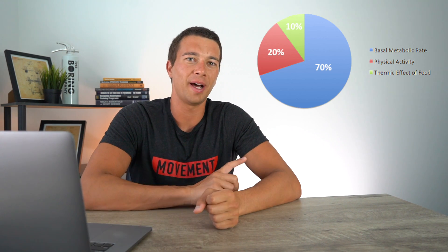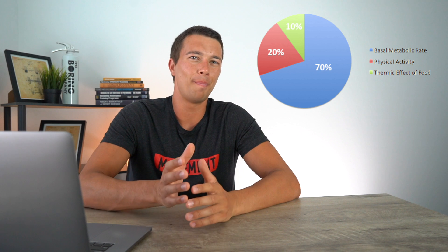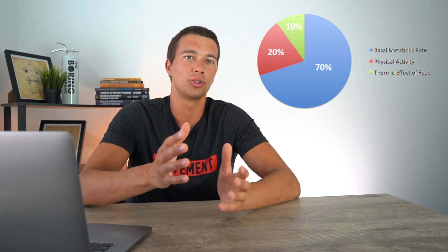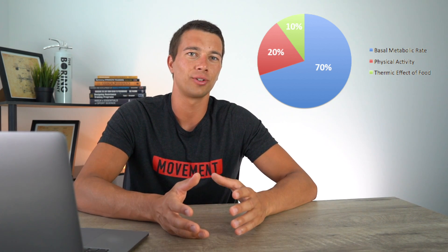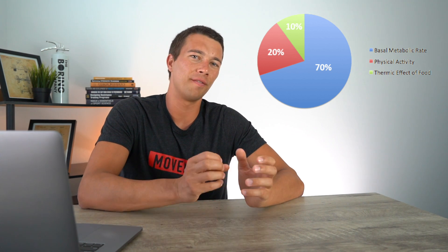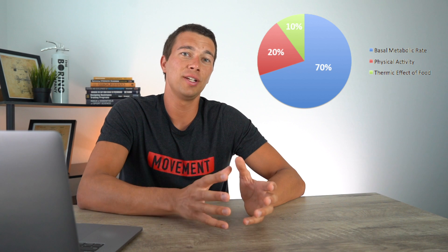So to start off, metabolism is basically how we break down what we eat and turn it into energy. Let's just use this pie chart as a basic example of the breakdown of metabolic rate. This will vary person to person, but on average, basal metabolic rate makes up about 65 to 70% of your total daily energy expenditure. So the full pie chart would be how many calories you're burning in an entire day — for the average person, that might be around 2,000 calories. So if we think about 70% of that, that's going to be about 1,400 calories from that blue section, and that's the basal metabolic rate.